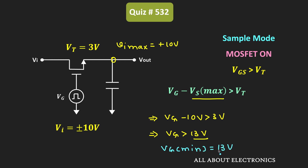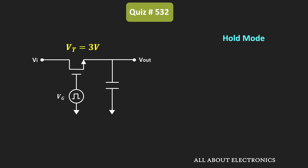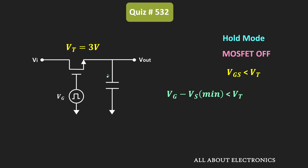Now let us find the maximum value of the gate voltage, which occurs during the hold mode. During the hold mode, the MOSFET will remain in the OFF condition, which happens whenever VGS is less than the threshold voltage — that is, VG - VS is less than the threshold voltage. To find the maximum gate voltage, we should consider the minimum value of the source voltage, because even at the minimum source voltage, the MOSFET should remain OFF.